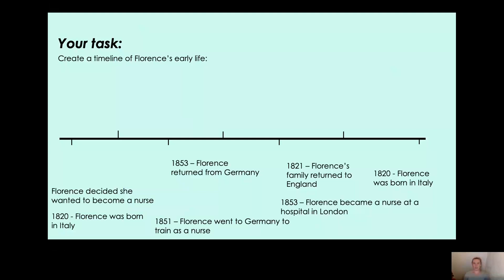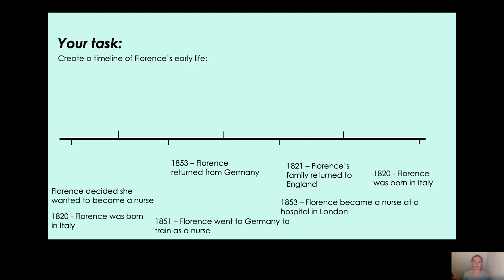Now here is your task. You need to create a timeline. Things need to be in chronological order — the order that they happened. The first thing that happened goes first, and the last thing goes at the very end. The events are: Florence was born in Italy; Florence decided she wanted to become a nurse; Florence went to Germany to train as a nurse; Florence returned from Germany; Florence's family returned to England; and Florence became a nurse at a hospital in London. Some of them have the years on them — have a think about which was the first thing that happened. Pause the video and have a think.